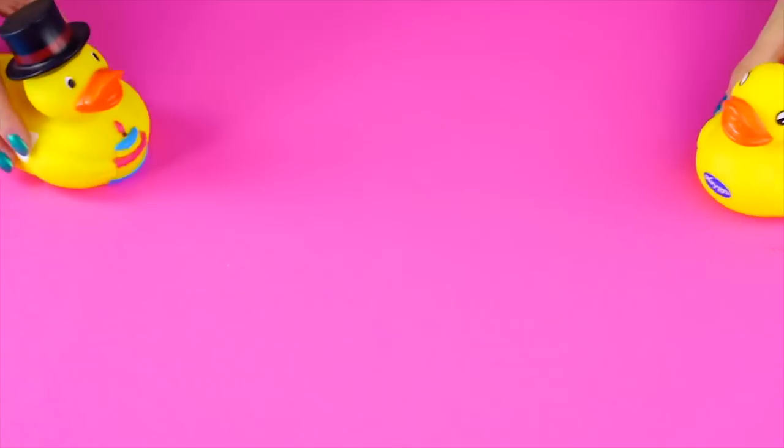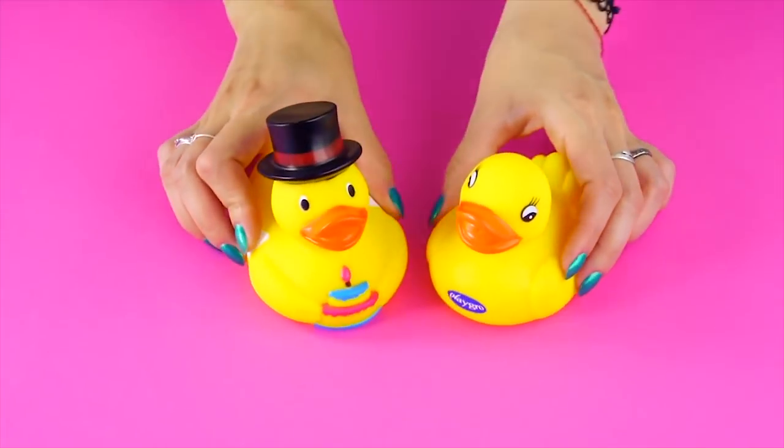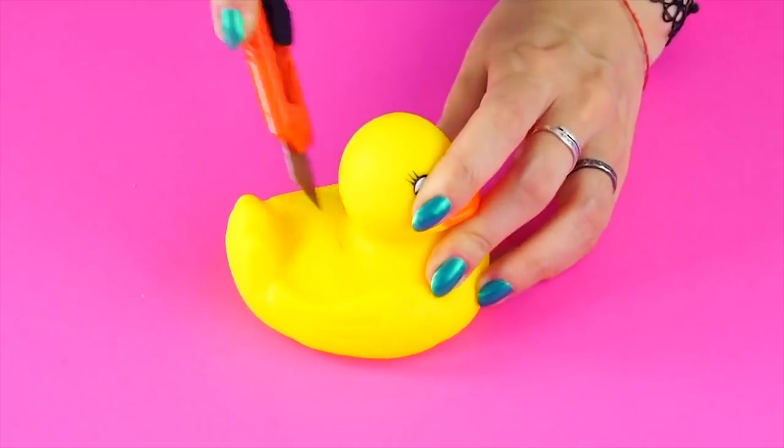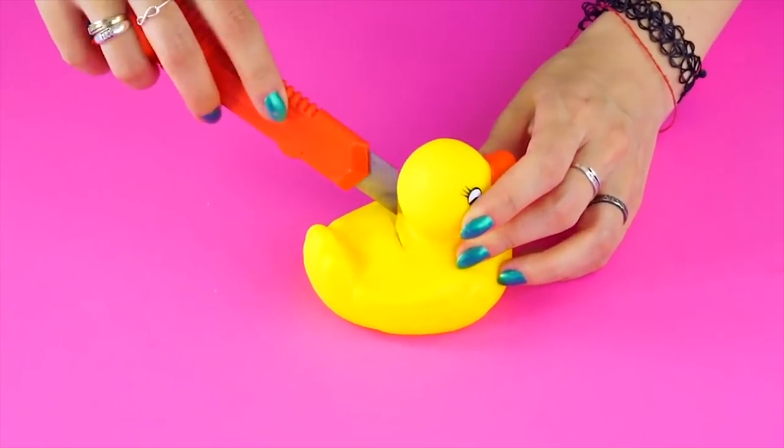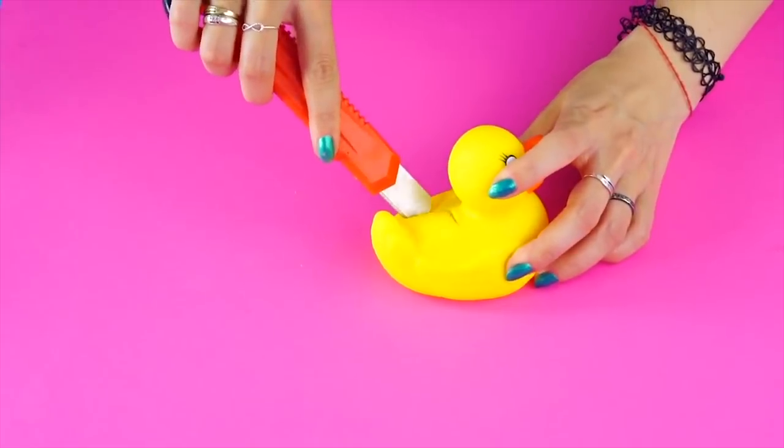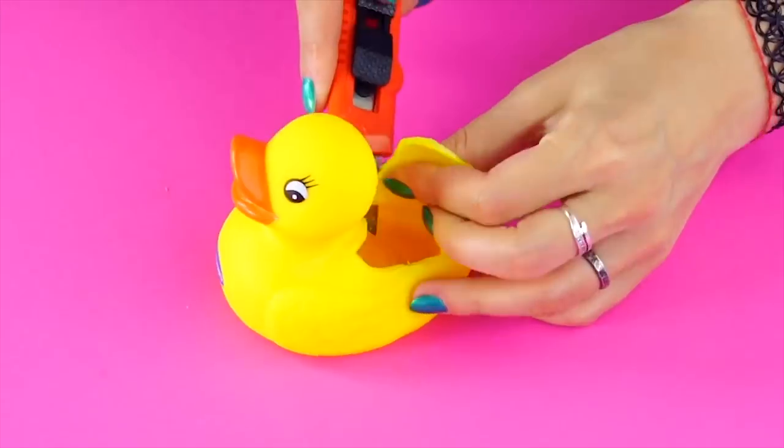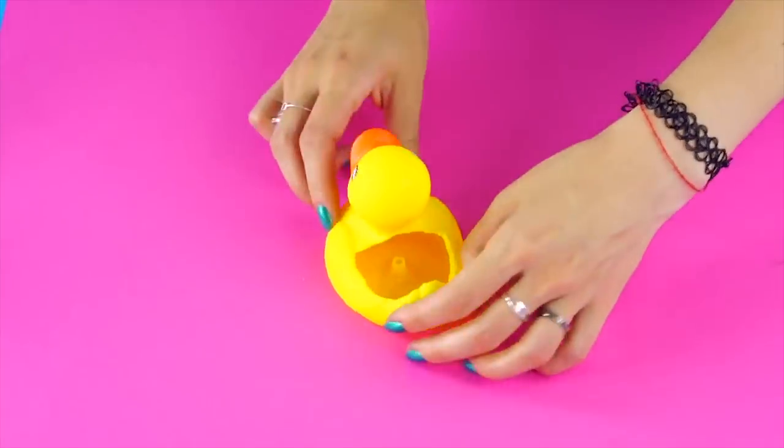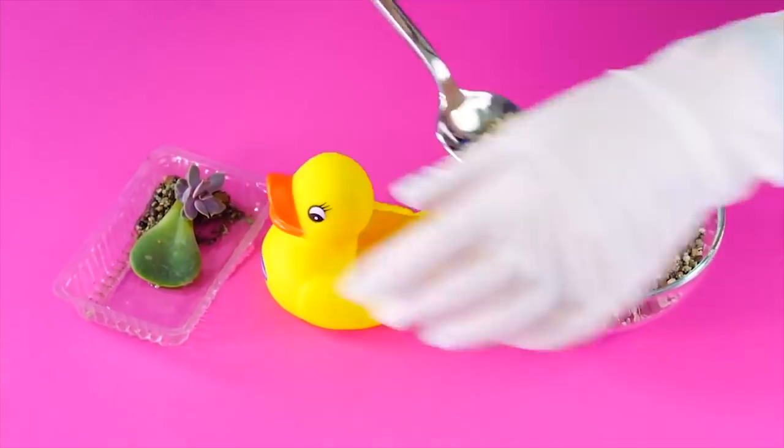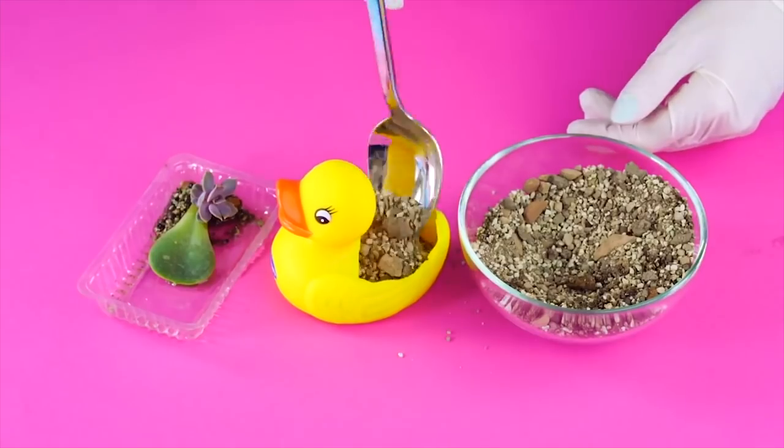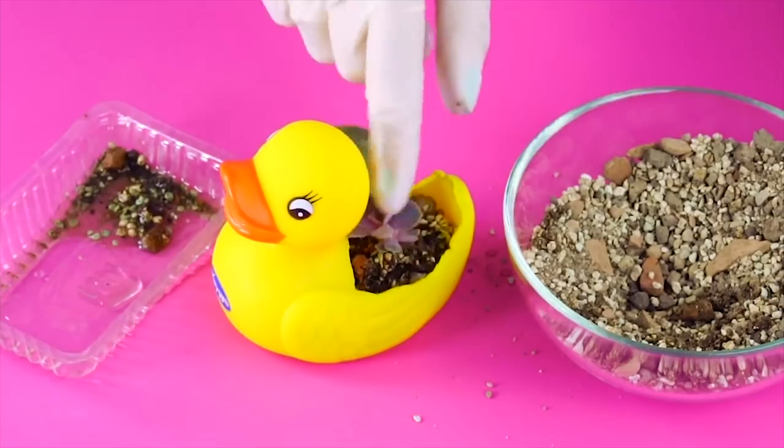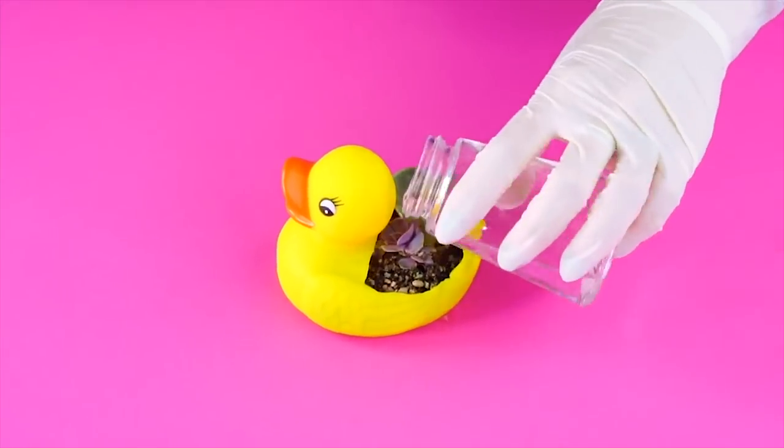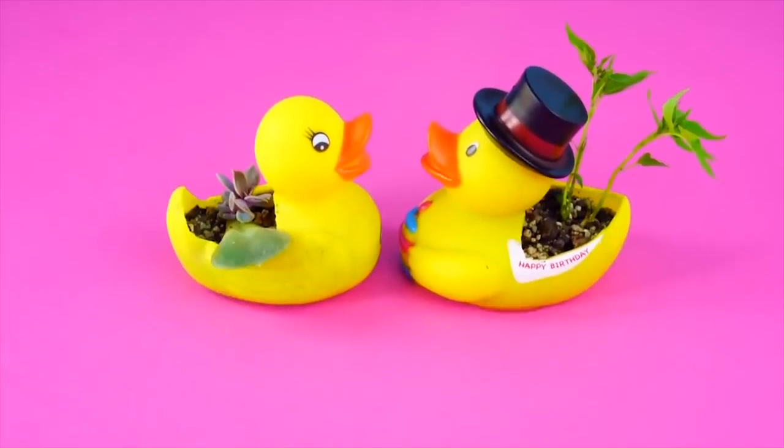Toy planter. Got an old rubber ducky? Let's give him a new life. For this, you'll want to carefully heat up the blade of your exacto knife to make it easier to cut the rubber ducks. Cut a hole in the top of the duck's back. The opening should look like this. Now add some potting soil. Give it some water and watch it grow. These planters make great gifts.